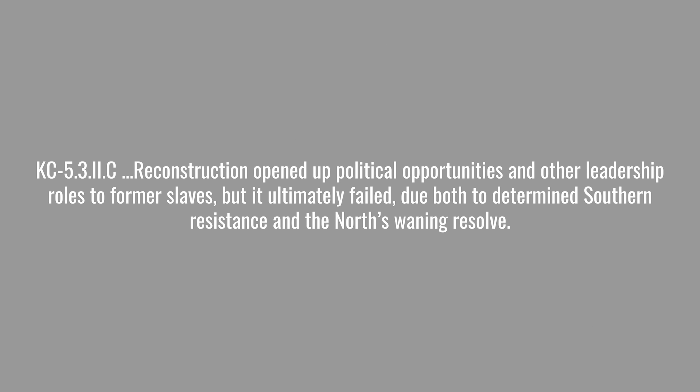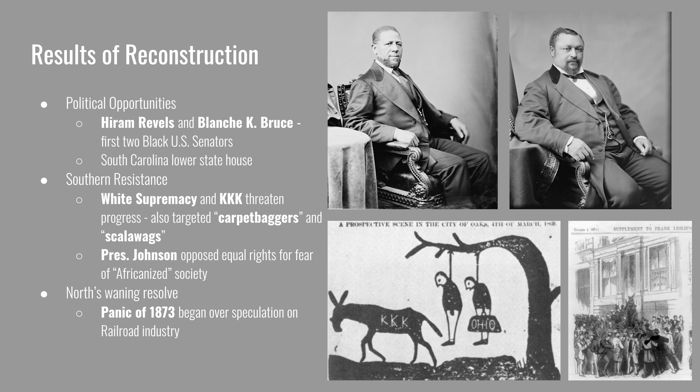Reconstruction also opened up political opportunities and other leadership roles to former slaves. Actual Black legislators served in the U.S. House of Representatives, the U.S. Senate, and various state legislatures. Hiram Revels, on the left of the screen, was the first-ever Black U.S. senator, appointed in 1870 from Mississippi. Blanche K. Bruce, on the right, was the second Black U.S. senator, also from Mississippi. Significantly, they filled the same seat once held by Jefferson Davis, president of the Confederacy. The South Carolina lower state house also saw a Black majority of legislators.